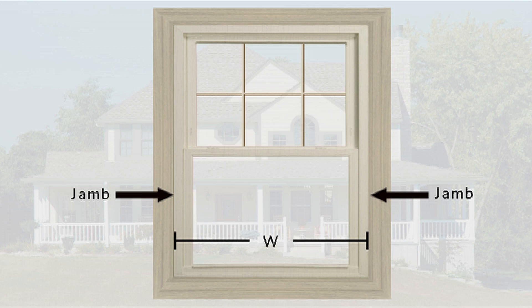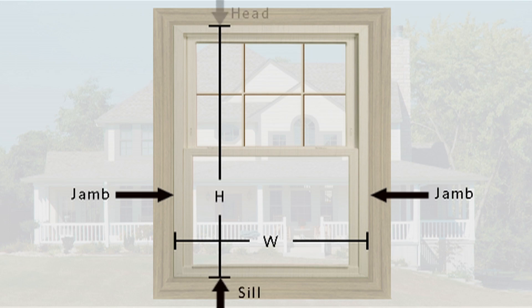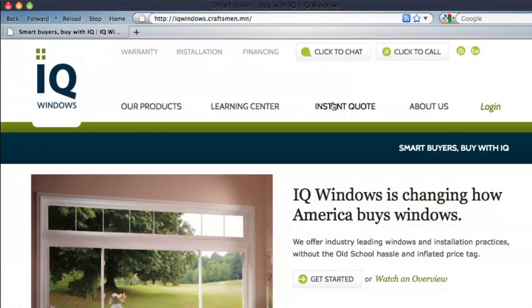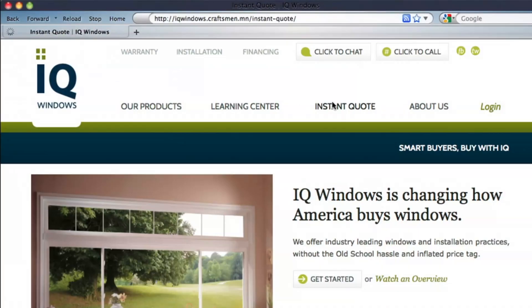Next, you need to measure the height of the window. Most, but not all, existing windows will have a sloped sill. This is important to note because you want to be sure to record the shortest vertical measurement, which occurs at the top of the sill.